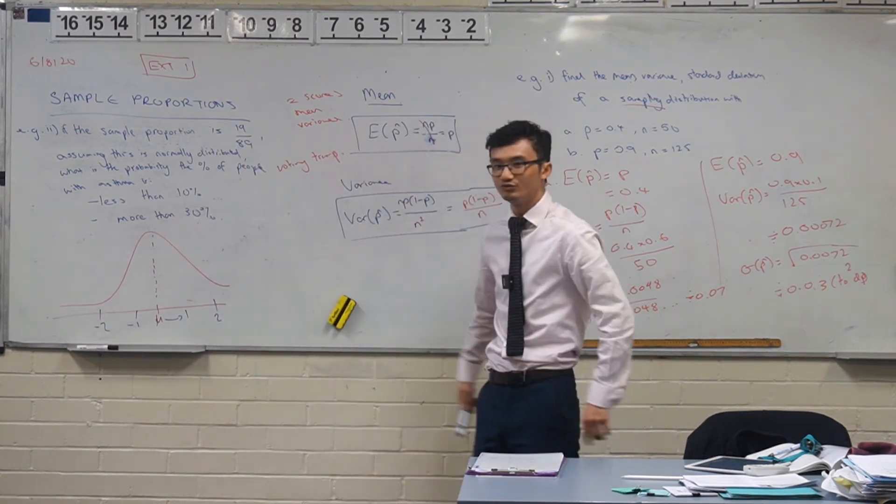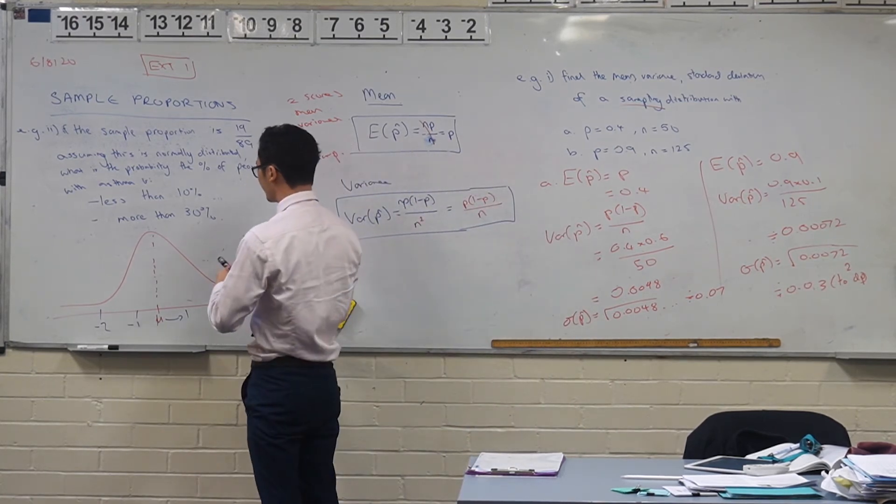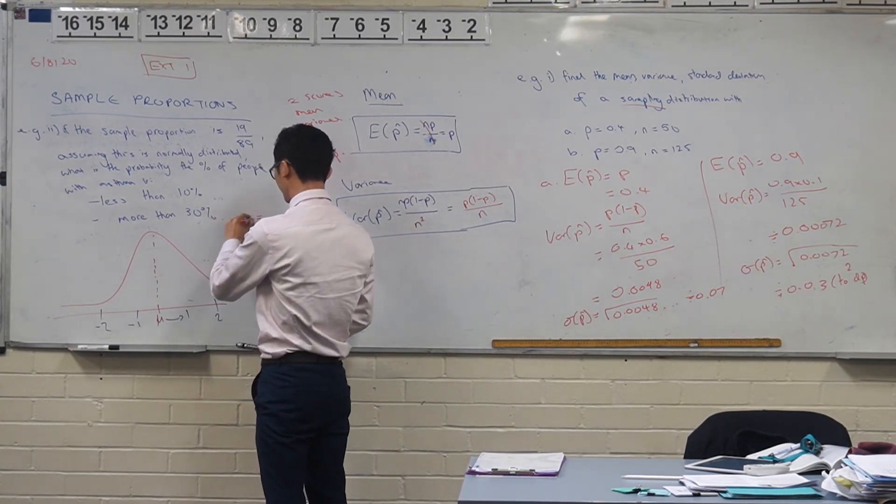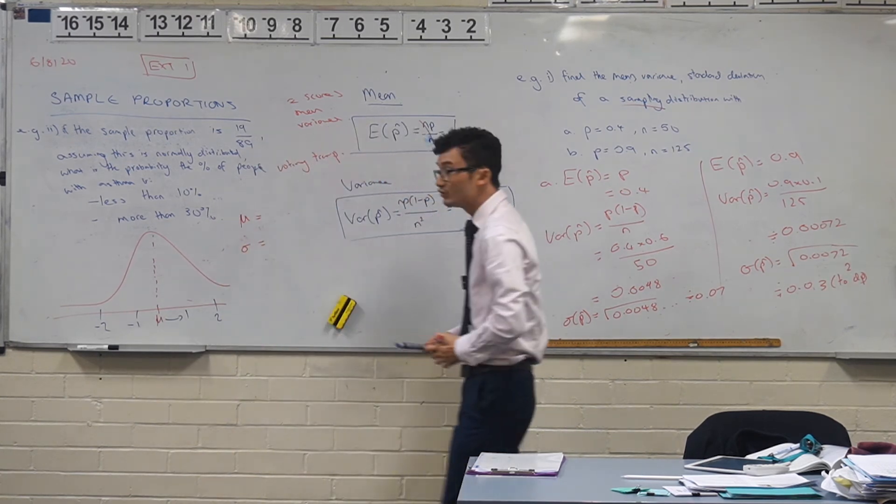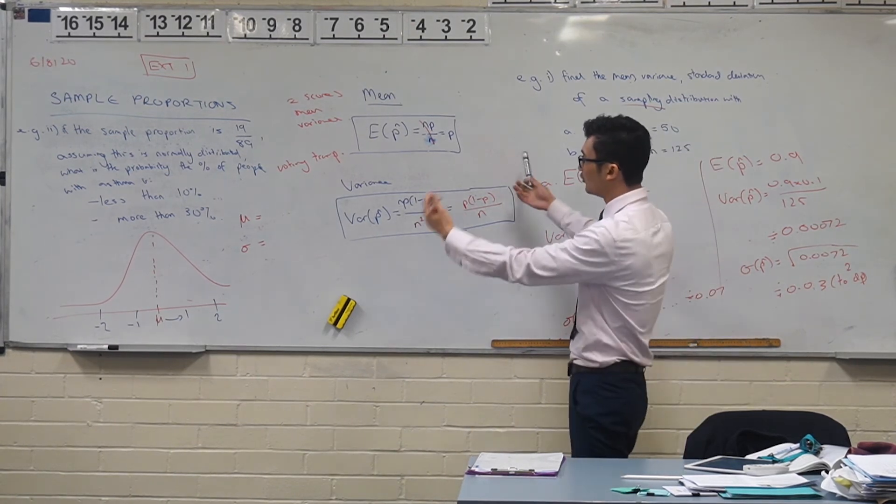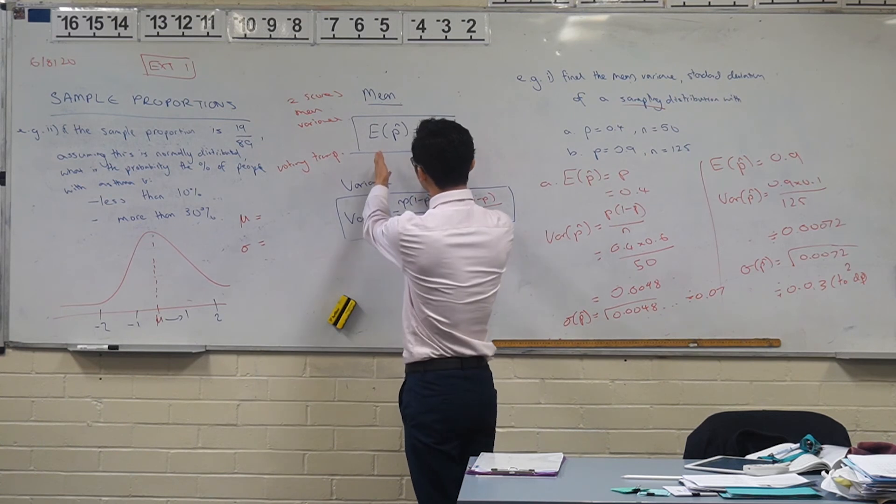How many standard deviations away? That's exactly right. Yeah, it's how many standard deviations away. So you had 1, negative 1, 2, negative 2, so on and so forth. And so what you realized was that, okay, in order to do this, I need to find the average, I need to find mu, and I also need to find the standard deviation, sigma. And we can do that now with this sample proportion using our formulas.